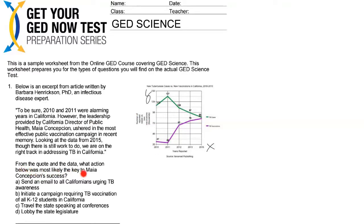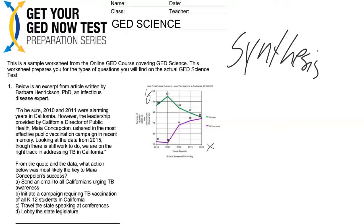Let's go to the question. From the quote and the data — that's the synthesis question we talked about. It says: from the data, what action below was most likely key to Maya Concepcion's success? Option A: send an email to all Californians urging TB awareness. That might have happened, but is that really the most likely key to her success? I'm going to mark that one out.